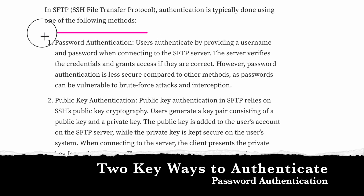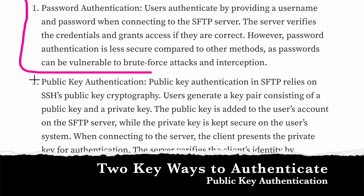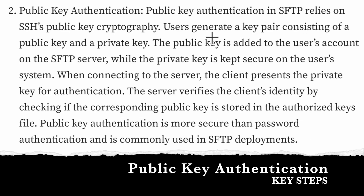Password based authentication is where we use username and password, and that is what is verified at the server to grant access to the FTP. Now in case of SFTP, we have an option to do SSH public key cryptography for authentication. Here we generate a key pair — a public and a private key pair. The private key is with the client making the connection to the server, and that is what is used for client authentication. That is essentially public key authentication.